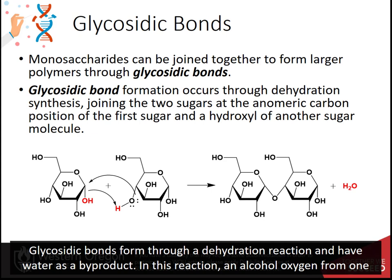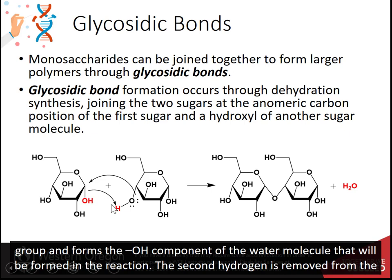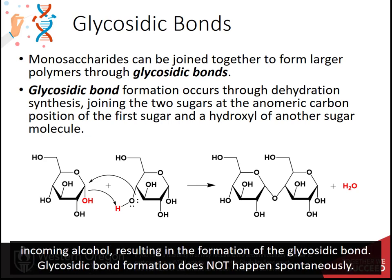Glycosidic bonds form through a dehydration reaction and have water as a byproduct. In this reaction, an alcohol oxygen from a sugar attacks the anomeric position of the neighboring sugar. The hydroxyl group on the anomeric carbon serves as a good leaving group and forms the OH component of the water molecule. The second hydrogen is removed from the incoming alcohol, resulting in the formation of the glycosidic bond.